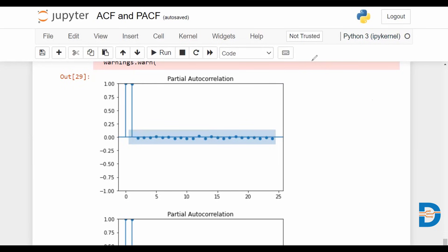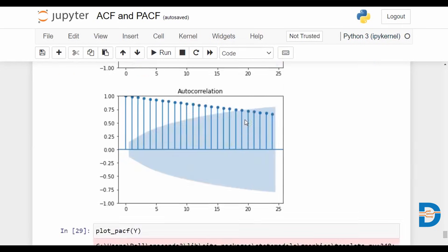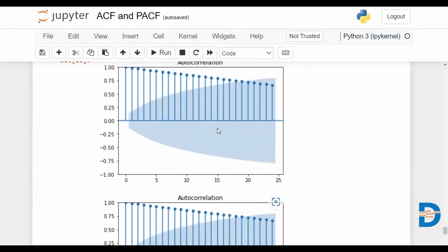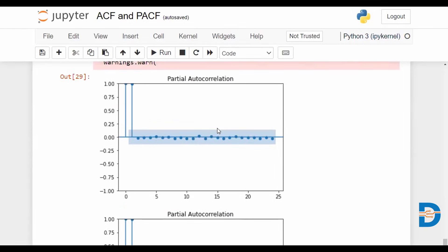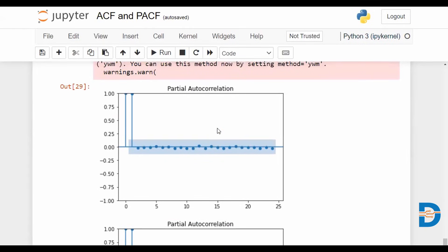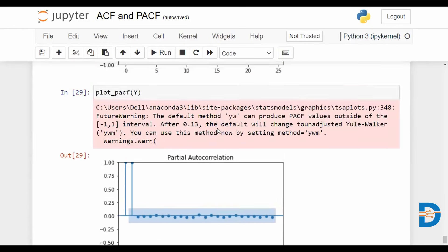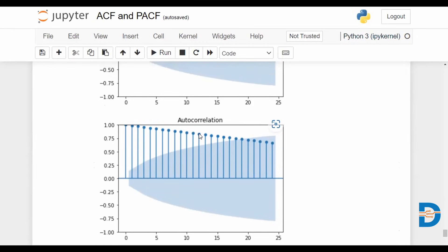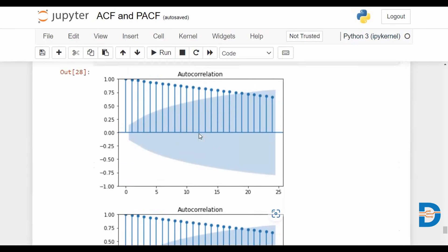Now, if we were to replicate this for a moving average model, typically our plots would be something reversed, where you would have the partial autocorrelation moving more gradually. And you would see some sudden jumps or a sudden shutting off in the ACF plot.